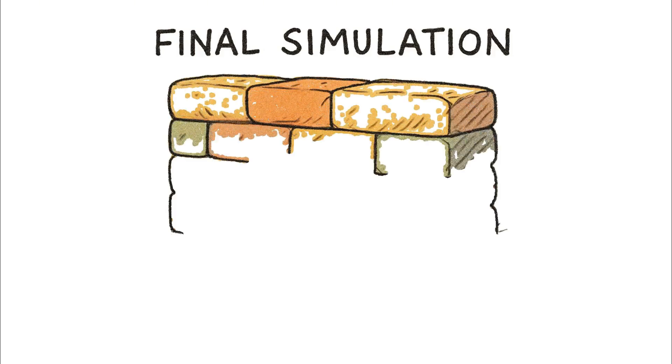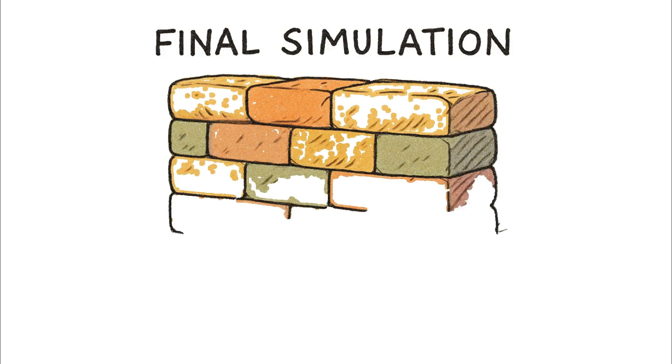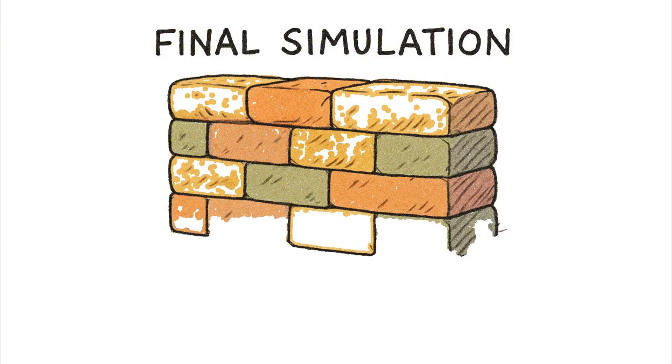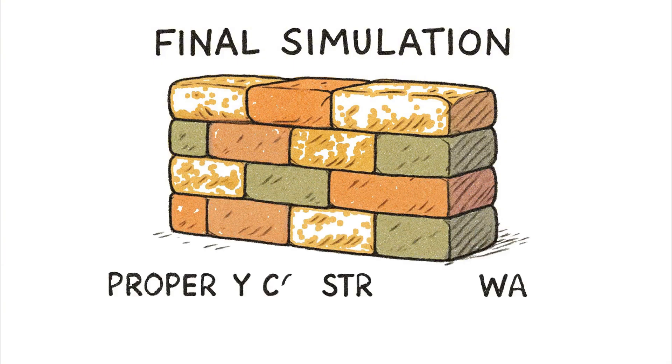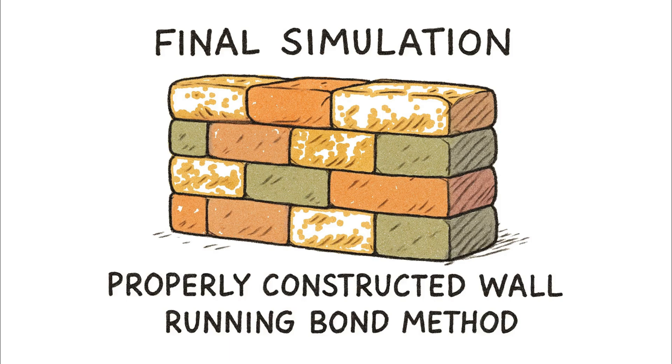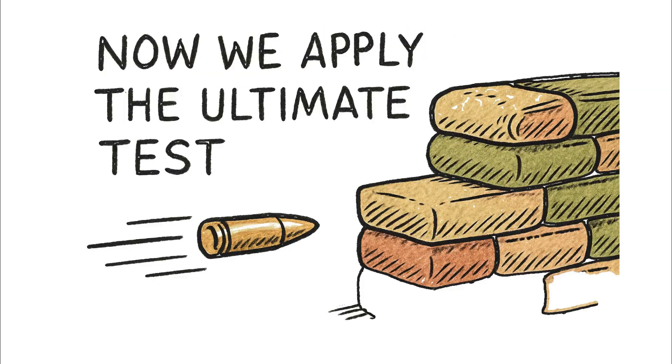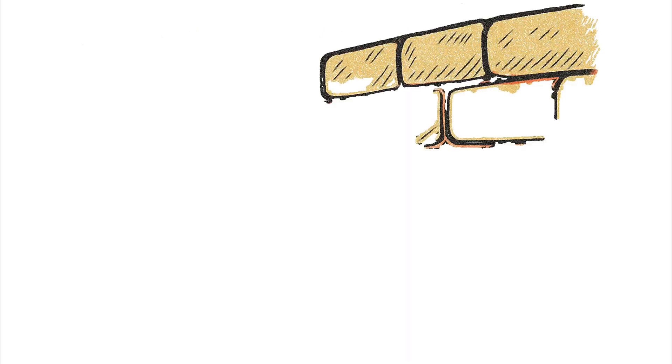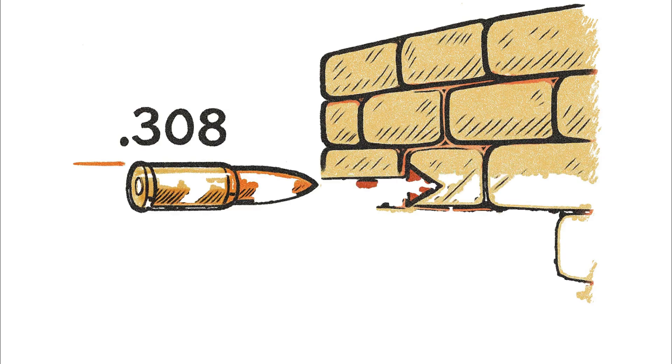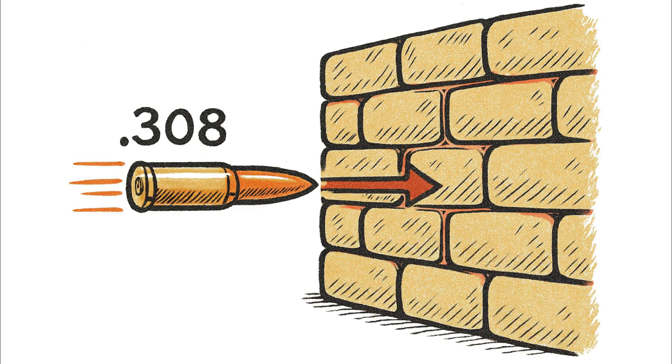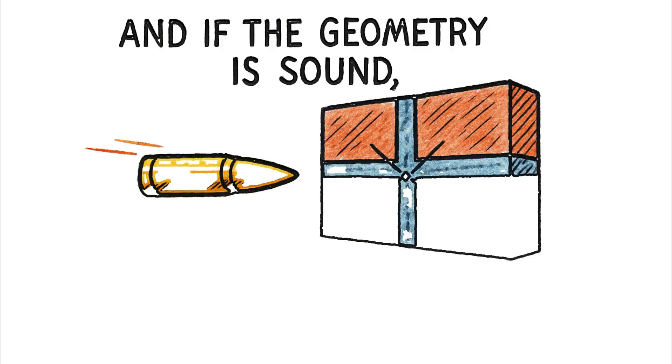Let's run a final simulation to prove the solution, with the model now a properly constructed wall using the running bond method, where every seam is staggered and overlapped and the bags are packed in tight. Now we apply the ultimate test. The .308 rifle round is introduced into the simulation, the same round that blew right through the flawed wall.